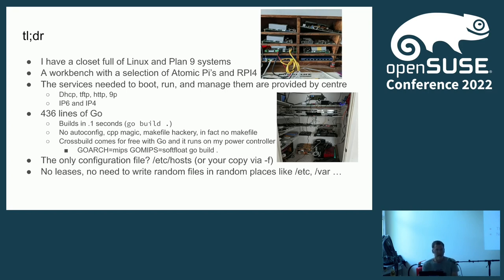It's 436 lines of Go. It builds in a tenth of a second. There is no autoconfig, no CPP magic, no makefile hackery — in fact, there's no makefile. Cross-build comes for free because that's the way Go works. If I want to run this on my Digital Loggers power controller, I say GOARCH=mips, GOMIPS=softfloat, go build dot. The only configuration file I have is /etc/hosts — and there's no persistent state, no leases, no random files littered all over your filesystem. There's just /etc/hosts.